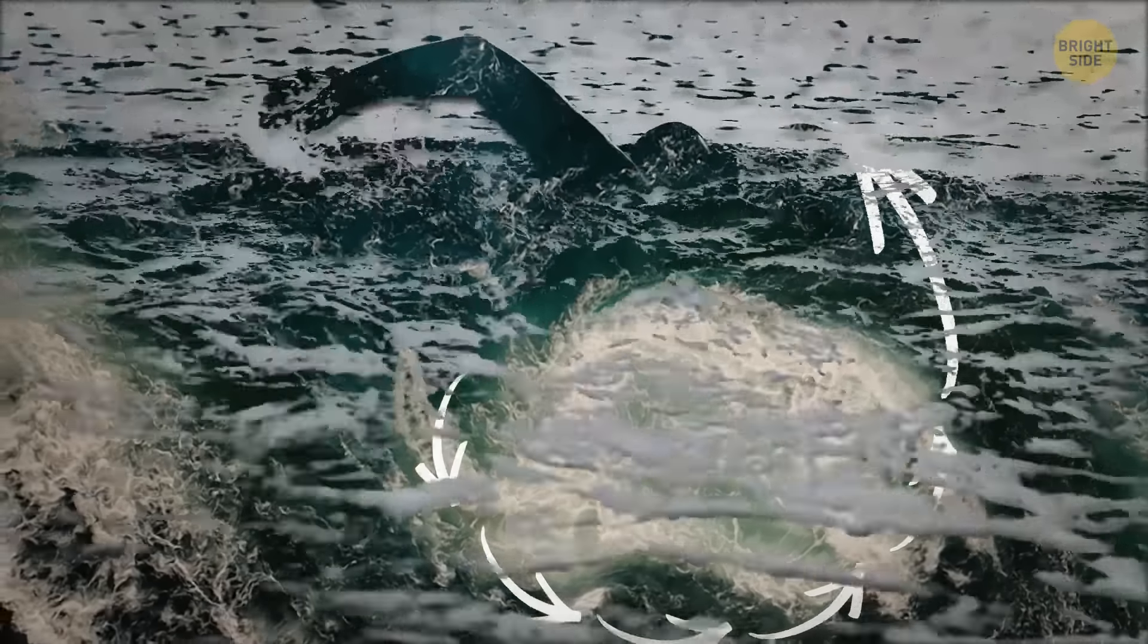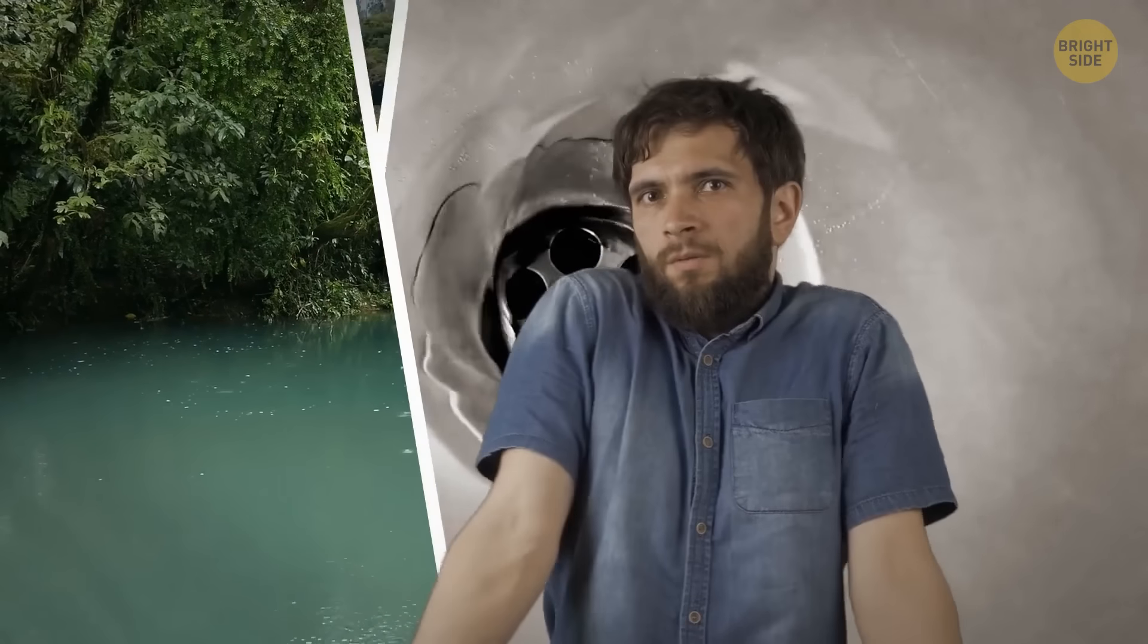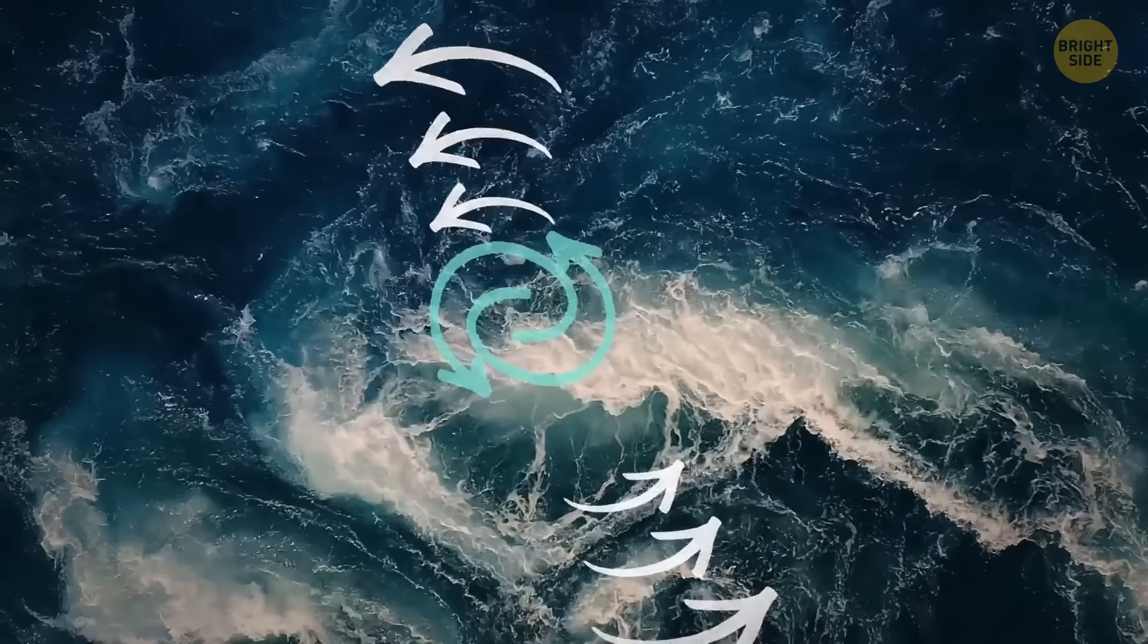You swim to the shore and decide to learn all about whirlpools. It forms in the sink or bathtub because the water begins to drain into the hole and swirl. There are no drain holes in the sea, lake, river, or ocean. And water vortexes are formed there because of the collision of two currents.